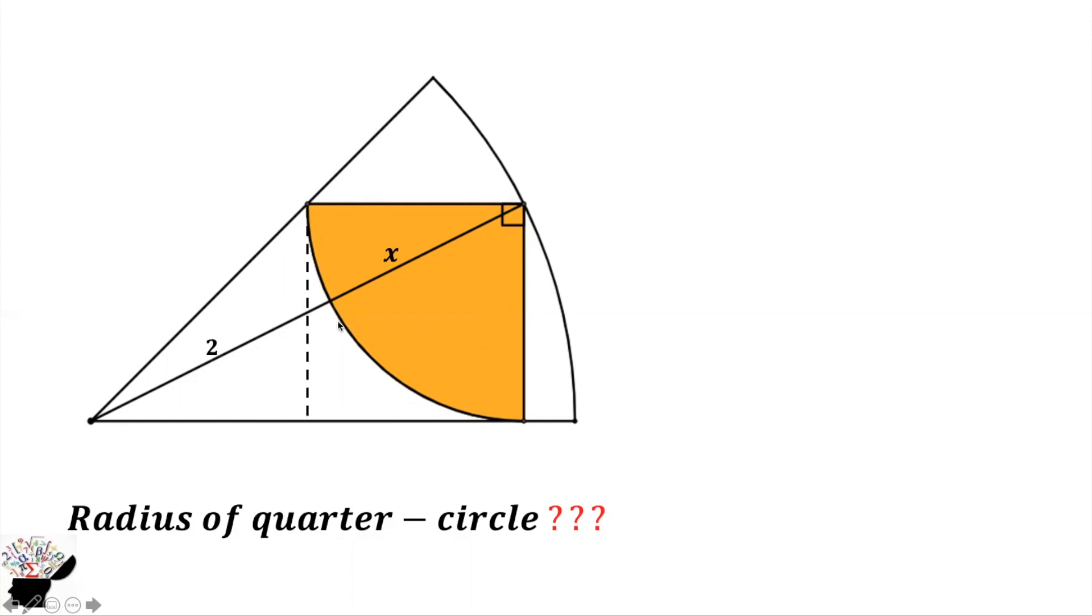We know that anytime we have a square which is inclined at the end of a sector, the angle will be 45 degrees. Since it's inclined, the angle here is 45 degrees.